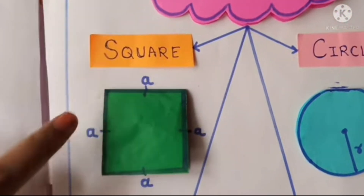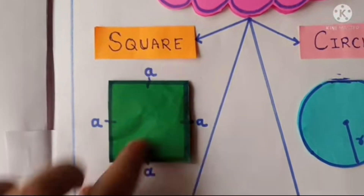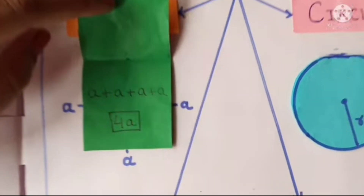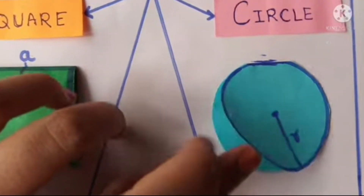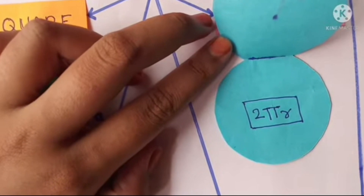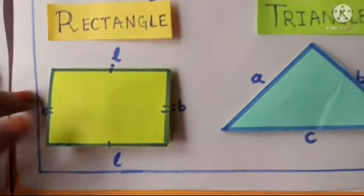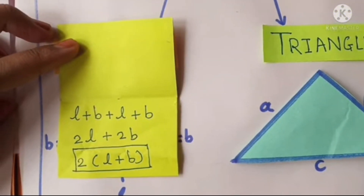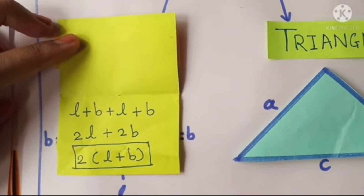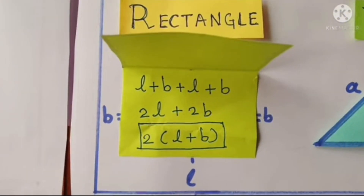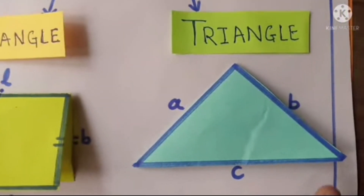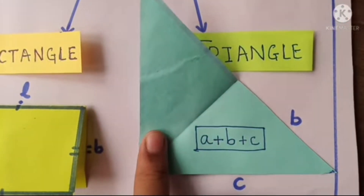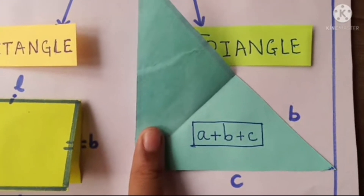Square: the perimeter of a square is a + a + a + a, that's 4a. Circle: perimeter of circle is equal to 2πr. Rectangle: l + b + l + b = 2l + 2b = 2(l + b). Triangle: perimeter of triangle is equal to a + b + c.